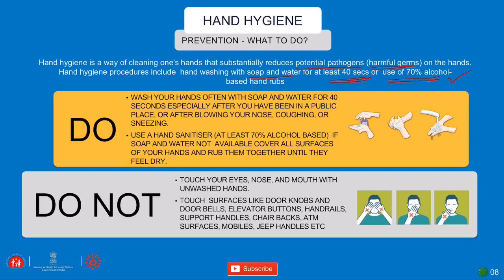What you should do: wash your hands often with soap and water for 40 seconds, especially after being in a public place or after blowing your nose, coughing, or sneezing. Use a hand sanitizer of at least 70% alcohol if soap and water are not available. Cover all surfaces of your hands and rub them together until they feel dry.